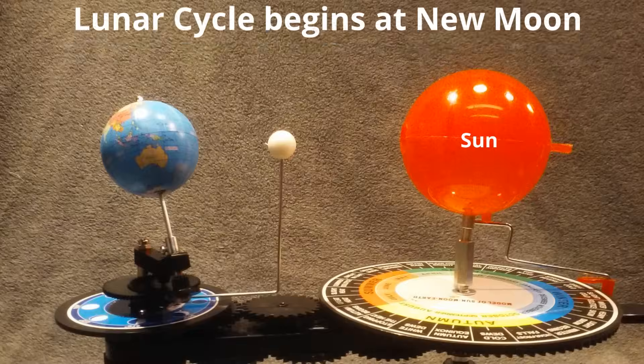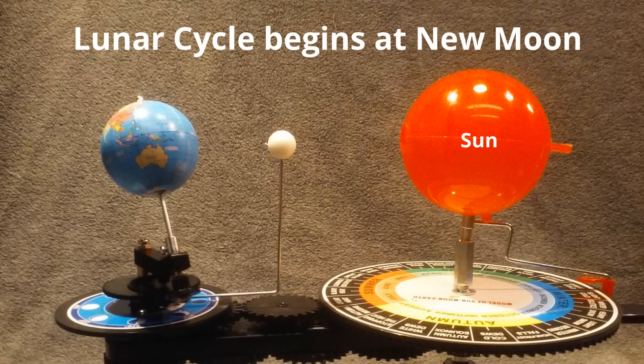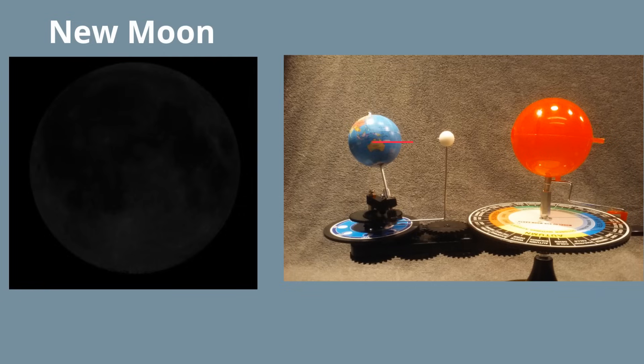The moon cycle or lunar cycle begins at new moon. Here's the alignment of new moon. And here's what new moon looks like from earth. And yes, it is very dark.